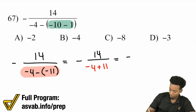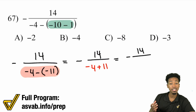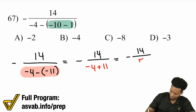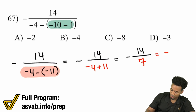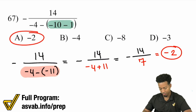Negative 4 plus 11 is the same thing as 11 minus 4, which is 7. So we have negative 14 over 7, which becomes negative 2 — and that's why A is the answer.